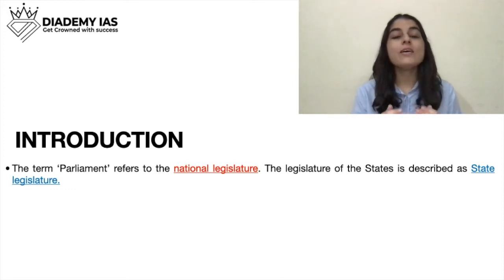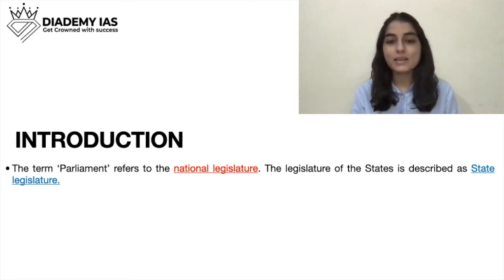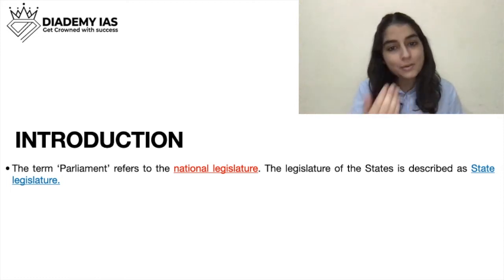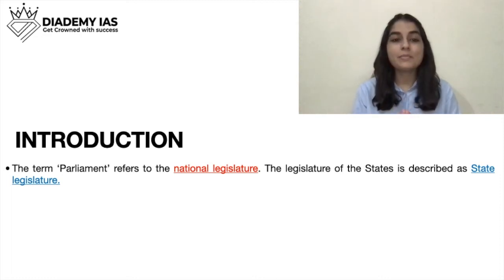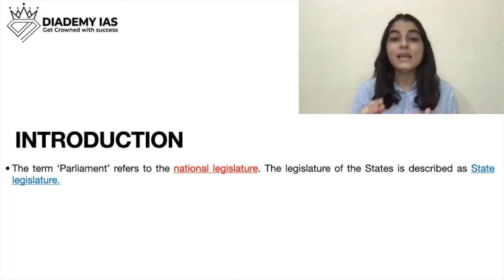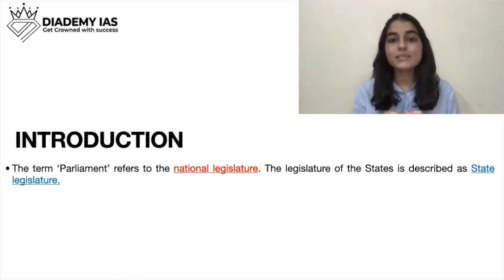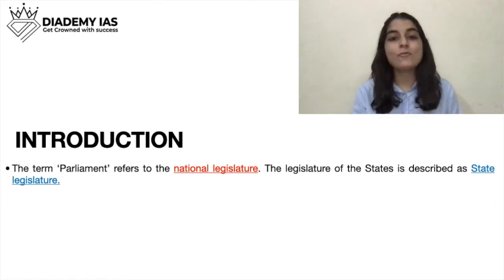In India, we have a bicameral legislature — 'bi' means two. So by the term bicameral legislature, we mean that there are two houses of Parliament. The two houses are Lok Sabha and Rajya Sabha. Lok Sabha is also called the House of the People and Rajya Sabha is also called the Council of States. At the state level, we have 29 states and from those, only seven states have a bicameral legislature.